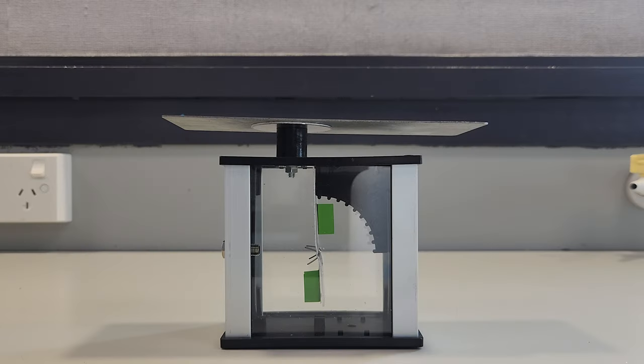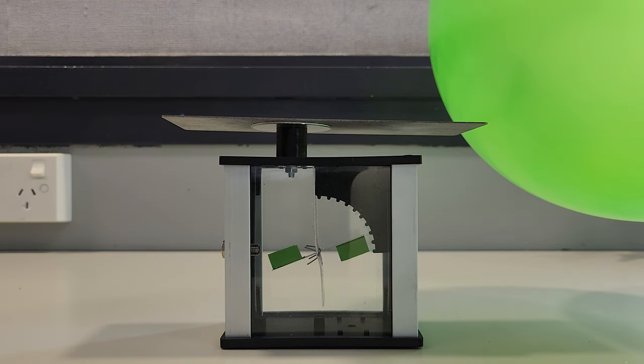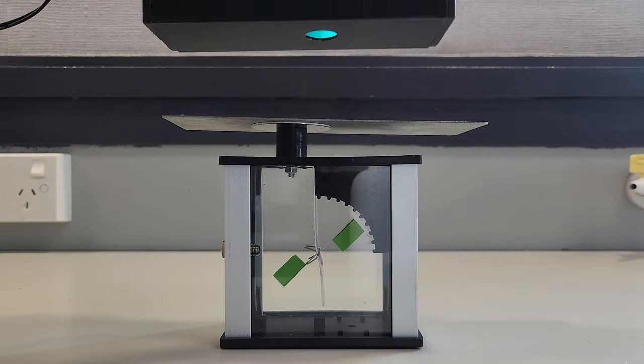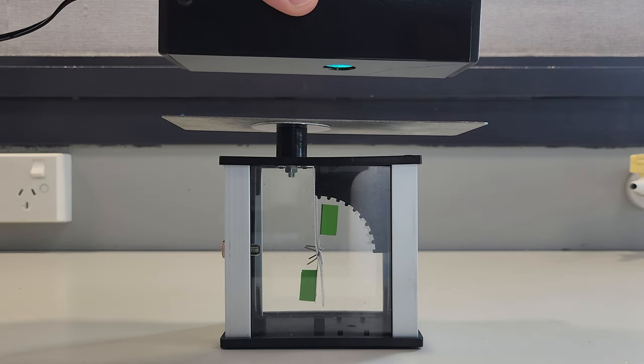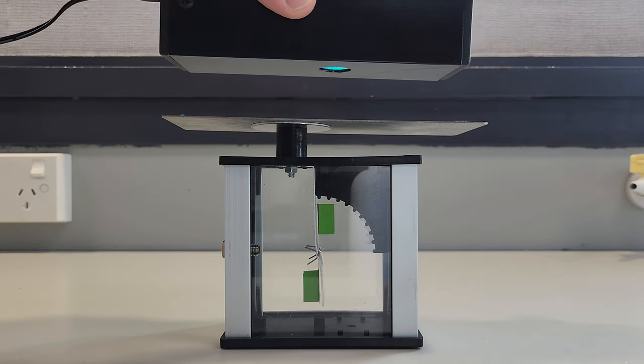I have here an electroscope, a device used to indicate the presence of charge, atop which is a plate of zinc metal. Adding electrons to the metal with a balloon, imparting a negative charge, we can use ultraviolet light to eject the electrons from the metal, removing the negative charge. This is called the photoelectric effect.